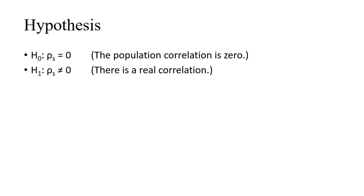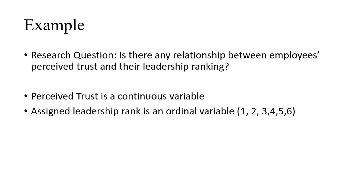When we develop the hypothesis: H0 states that rho-s equals zero, meaning the population correlation is zero; H1 states that rho is not equal to zero, meaning there is a real correlation. Let's take an example.